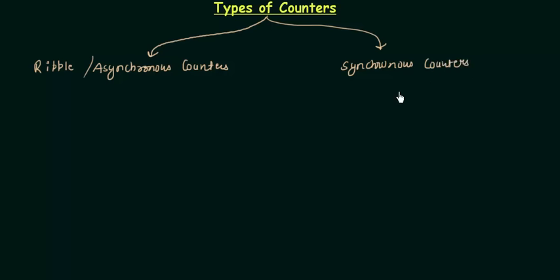Now we will see what these two types of counters are and how they are different from each other. First we will look at the asynchronous counters. For these counters, the external clock signal is applied to one flip-flop, and then the output of the preceding flip-flop is connected to the clock of the next flip-flop.